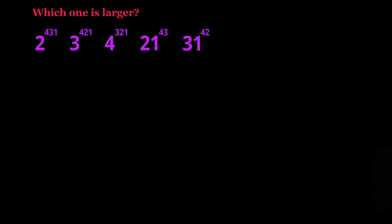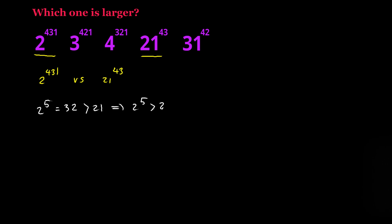So first of all I'm going to start by comparing the first number with this number. I want to compare 2 to the power of 431 with 21 to the power of 43. I'm going to start with the fact that 2 to the 5th power equals 32, and 32 is greater than 21, so I can say that 2 to the 5th power is greater than 21.